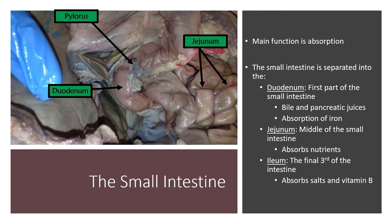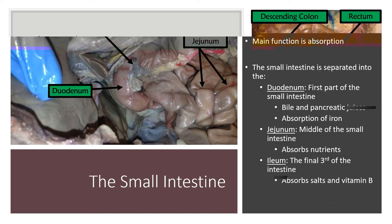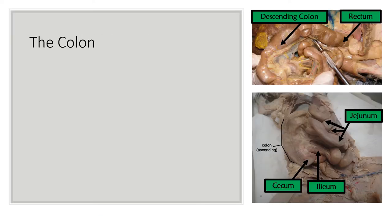The final, third part of the small intestine is the ileum, where salts and vitamin D are absorbed. Now we're entering the colon, also known as the large intestine. This is where water absorption takes place and feces is formed.